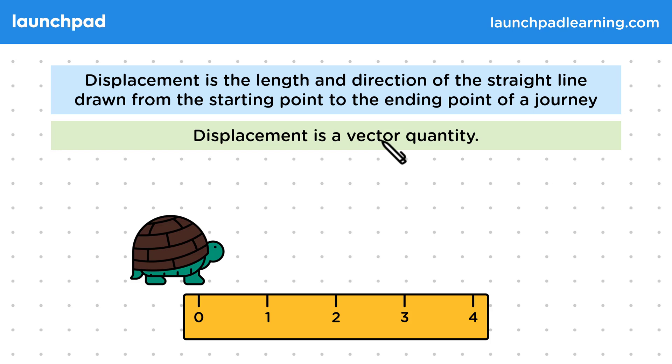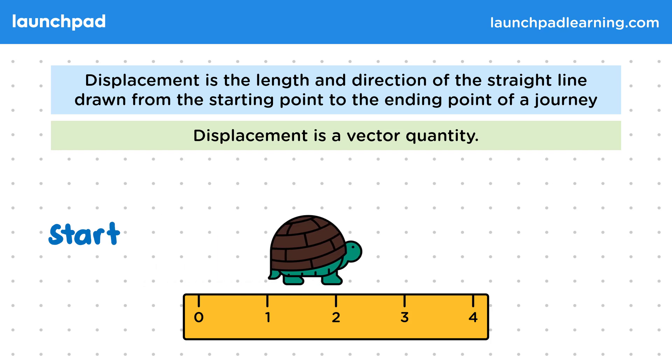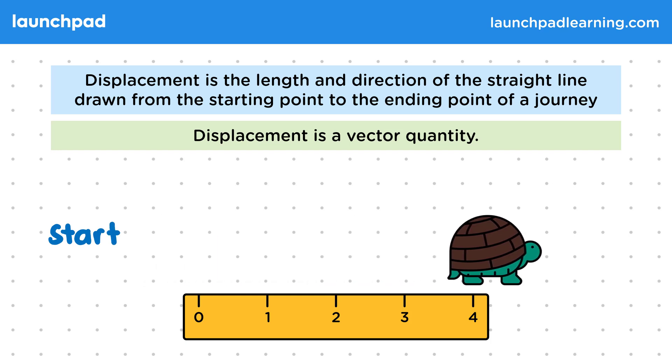Now a vector has both magnitude and direction. We can find the displacements of two journeys by drawing straight arrows from the start to the end points. Displacements can be written by giving a distance and also some indication of direction. So in this case the tortoise has moved four metres to the right.